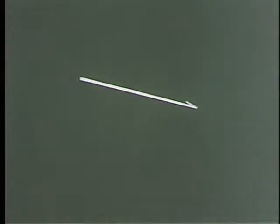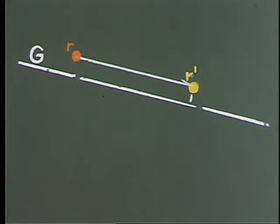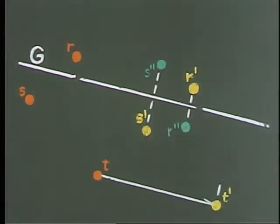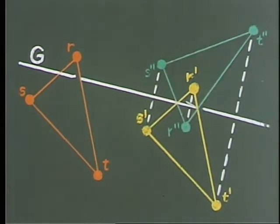The combination of a translation and the reflection in a line parallel to the translation is an isometry — from initial point to final point — which I call a glide reflection.